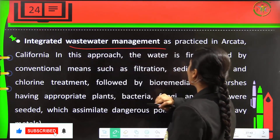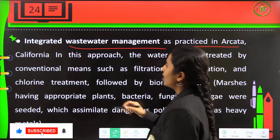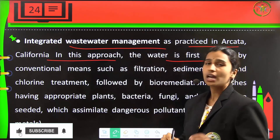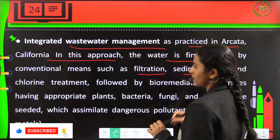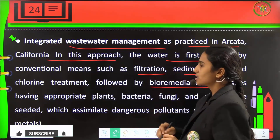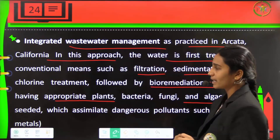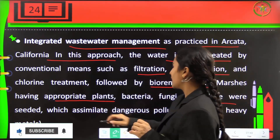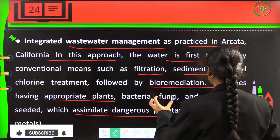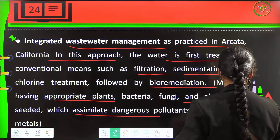Integrated wastewater management is a practice in Arcata and California. In this approach, water is first treated by conventional means like filtration, sedimentation and chlorine treatment, followed by bioremediation. Marshes with appropriate plants, bacteria, fungi and algae are seeded, which assimilate dangerous pollutants like heavy metals — these organisms consume those heavy metals.